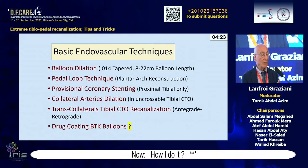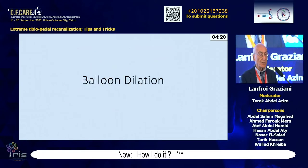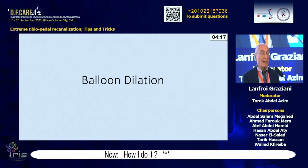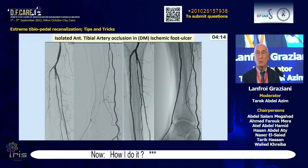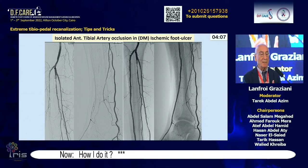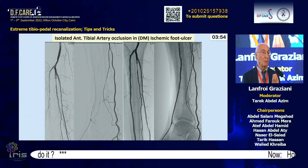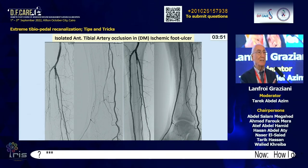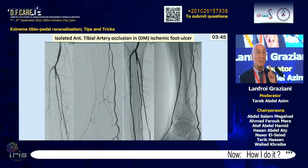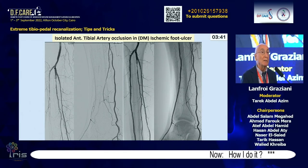Basic technical techniques include: balloon dilatation, pedal loop technique, provisional coronary stenting, and collateral dilation. Balloon dilatation is based on expansion of the occluded area from the intraluminal space, which provides the best protection from rupture and the best acute angiographic result. This case shows the typical appearance of the diabetic foot with lack of collateral formation and a single occluded tibial vessel.